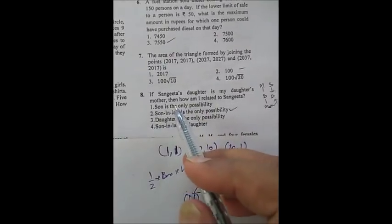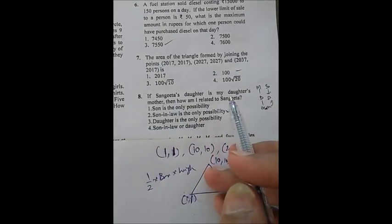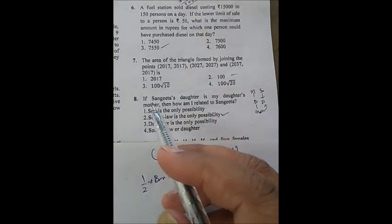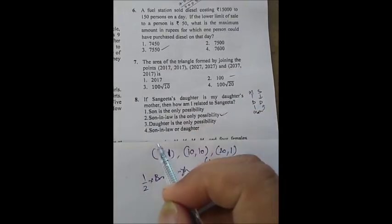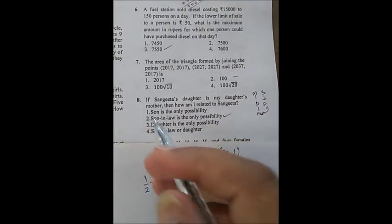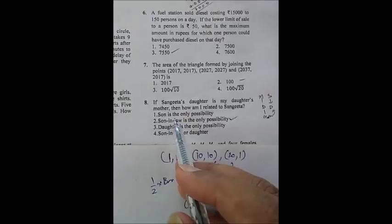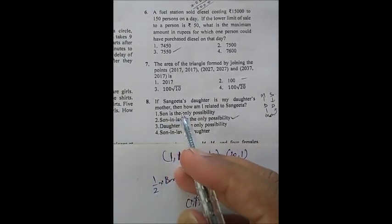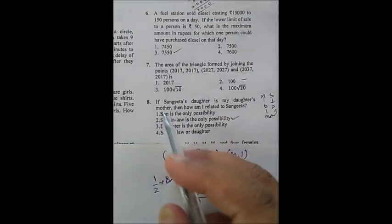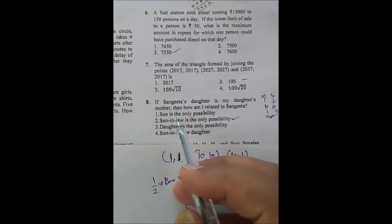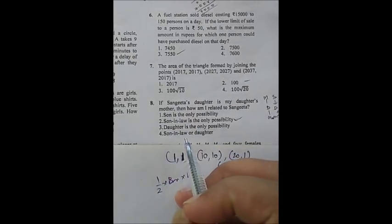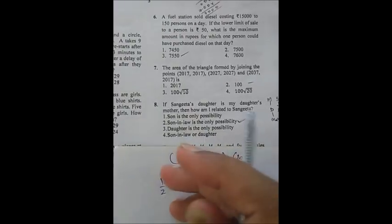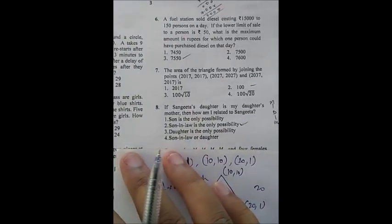This blood relation question asks: Sangita's daughter is my daughter's mother — how am I related to Sangita? This is easy if you are familiar with family relationship questions. My daughter's mother is my wife, so Sangita's daughter is my wife, making me Sangita's son-in-law. The correct option is son-in-law — that was the only possibility.